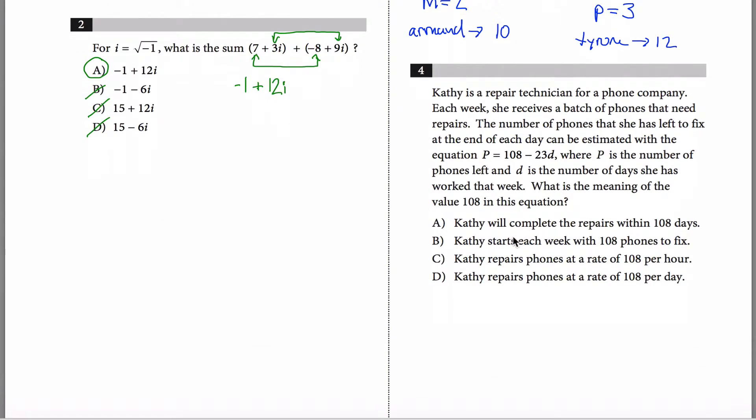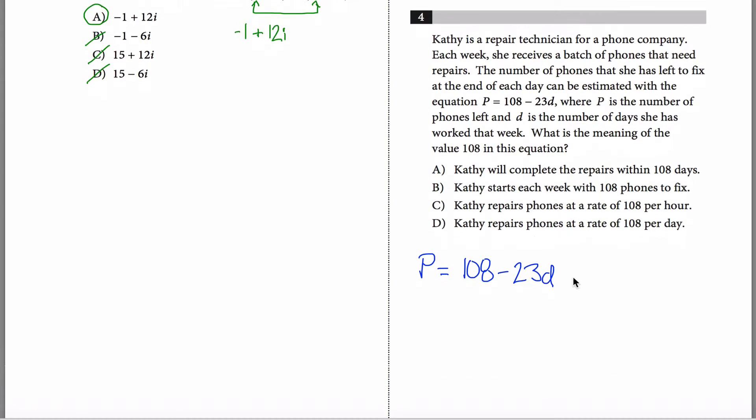All right, number four. Kathy is a repair technician for a phone company. Each week, she receives a batch of phones that need repairs. The number of phones that she has left to fix at the end of each day can be estimated with the equation. Okay, finally, we're getting to something useful here. P, which is the number of phones left, is equal to 108 minus 23 times D, where D is the number of days she has worked that week. So the way you can interpret this, it often helps to think about if D equals zero, I get 108. So before she's worked any days that week, she has 108 phones left to repair. And then every single day, she's subtracting 23. So if D equals one, she only subtracts 23 once. If D equals two, she's subtracting 23 twice. Each day, she's fixing 23 phones. So as D gets bigger and bigger, we subtract a larger and larger number here. Anyways, let's go through and figure out what they're asking for.